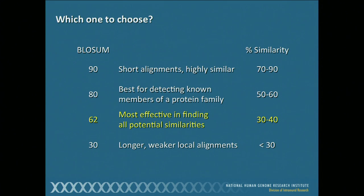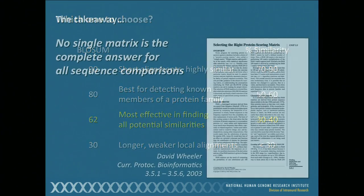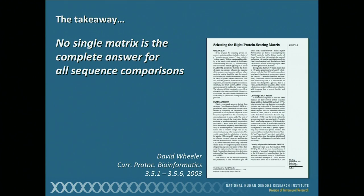Start off with these triple strategies until you get more familiar, or unless you really know what you're looking for. The bottom line is that no single matrix is the complete answer for all sequence comparisons. There is more information in this Current Protocols in Bioinformatics piece by David Wheeler that talks at much more length about the selection of matrices, but you have enough to get yourself started now.